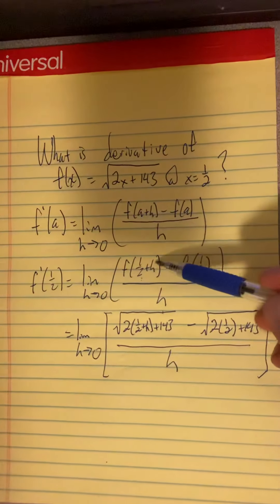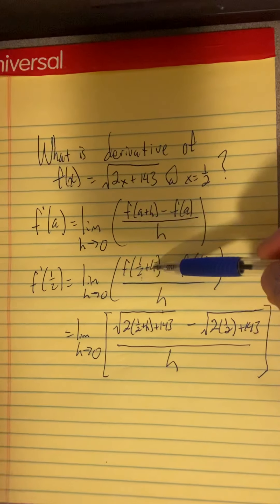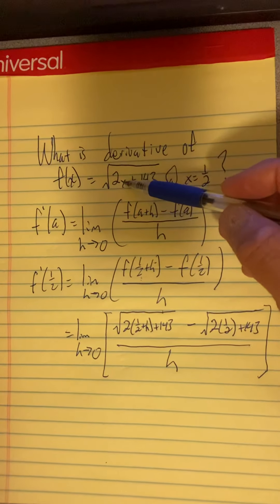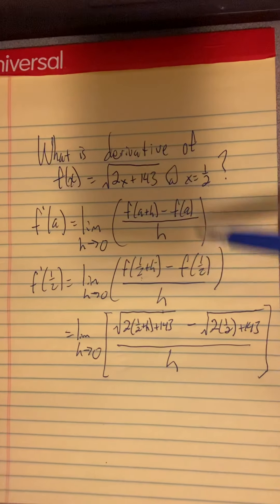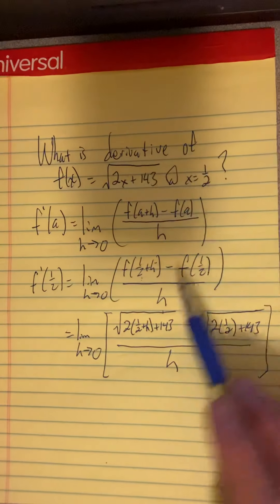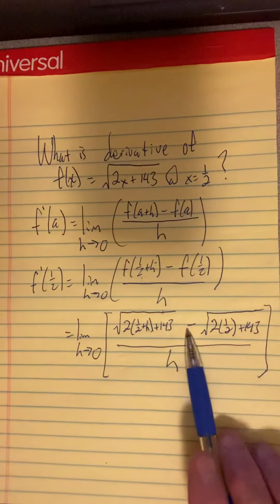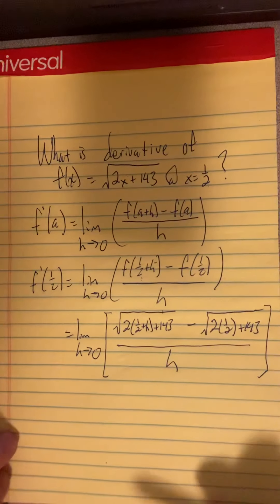So this just means evaluate the function, putting one half plus h in the place of the input. And then this means evaluate the function again, putting in one half in place of the input. And there's a difference in between them. So I find the difference of those two expressions.